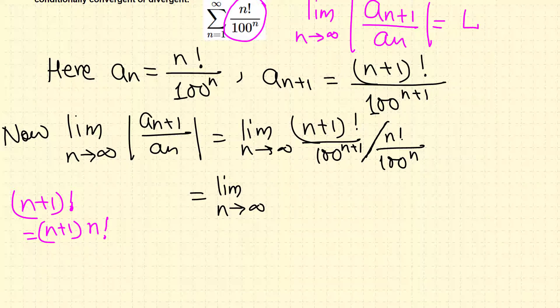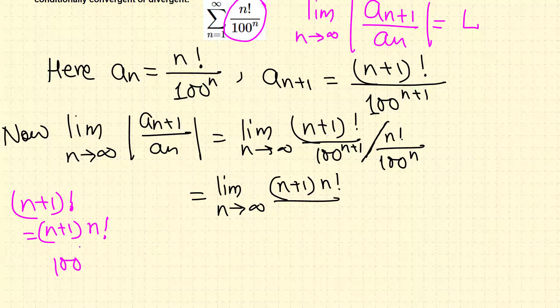That way we can cancel. So this is (n+1) times n factorial over 100 raised to n. Same thing, 100 raised to n+1 is the same as 100 raised to n times 100 raised to 1.